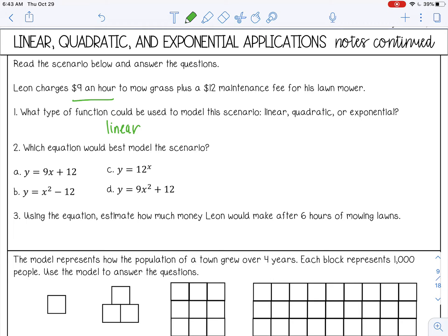And we have written equations like this. So he makes $9 per hour. And then there's also a $12 maintenance fee. So plus $12. That's our B in Y equals MX plus B. So which equation best models the scenario? Well, it's right here. 9X plus 12.